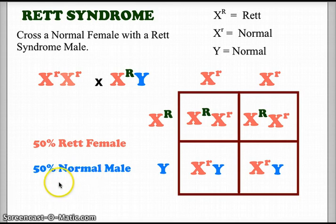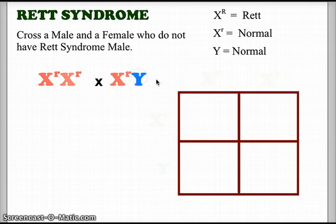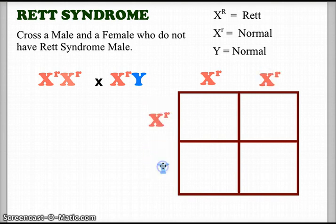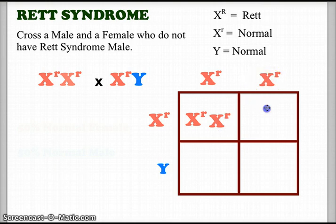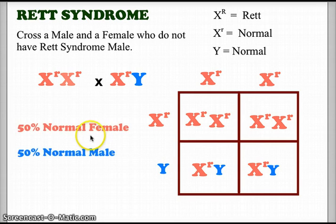Let's look at one more quick example: crossing a male and a female who do not have Rett syndrome. The female is X^r X^r and the male is X^r Y. Segregating the alleles and crossing gives us two normal females (X^r X^r) and two normal males (X^r Y). Our outcomes: 50% normal females and 50% normal males.